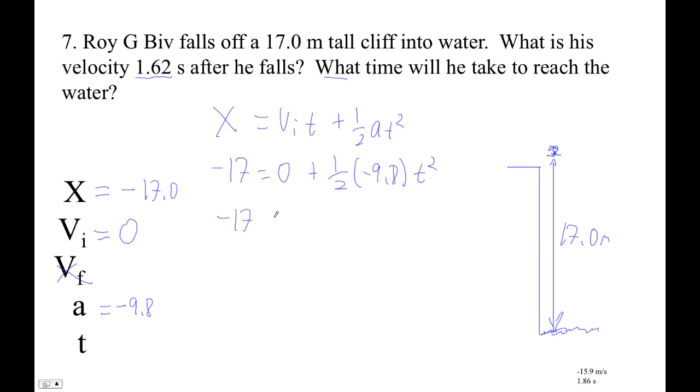Okay, so negative 17 is zero plus one half negative 9.8 times t squared. So negative 17 equals negative 4.9 t squared. Negative 17 divided by negative 4.9 is 3.46938. That equals t squared. And then to get what t is, I'm going to take the square root of that guy.